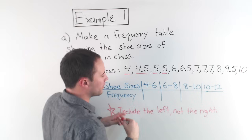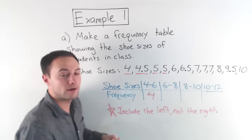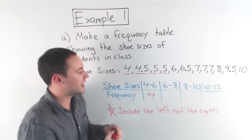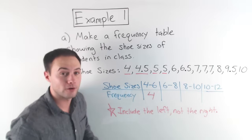And if you follow that rule, you'll be fine. So this six, I'm not going to include it here, right? This basically is from four all the way up, right up to six, not including six. So one, two, three, four. There were four students that had a size in that interval.